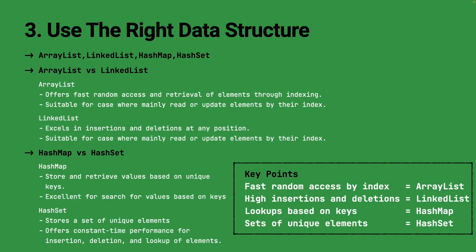The key takeaway is to choose the data structure that aligns with your specific use case. If you need fast random access by index, use ArrayList. If you require frequent insertions and deletions, especially in the middle, use LinkedList. For key-value mappings and quick lookups based on keys, go for HashMap. When dealing with sets of unique elements, opt for HashSet. By selecting the appropriate data structure, you can ensure your code operates efficiently, leading to improved performance and a better user experience.